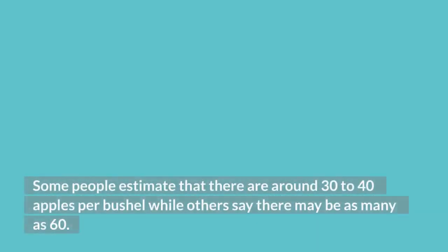Some people estimate that there are around 30 to 40 apples per bushel while others say there may be as many as 60. The truth is that it depends on the type of apple, and even the variety.